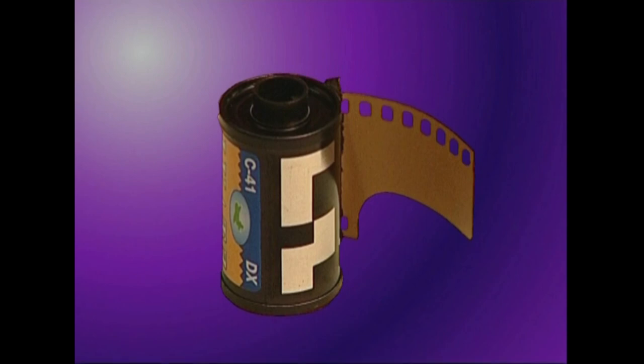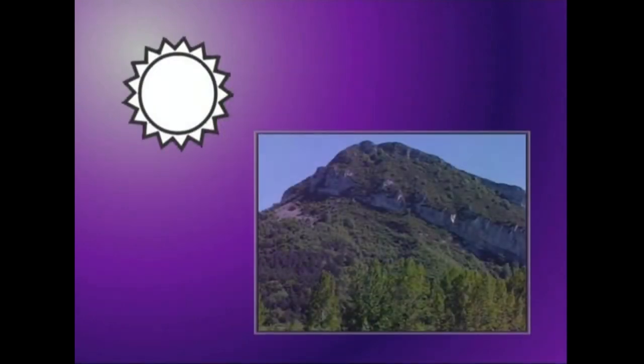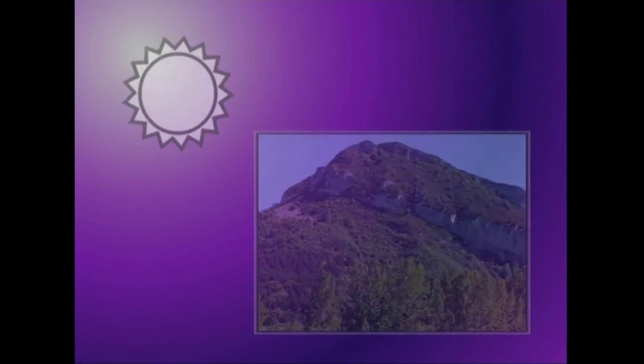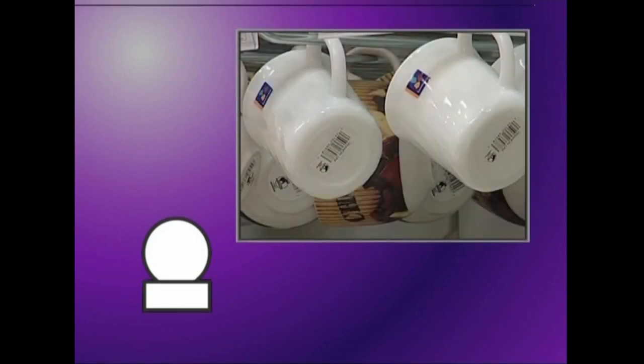Dakizuen bezala, merkatuan bi motatako pelikulak aurki ditzakegu. Argazkiak eguzkiaren argiaz egiteko erabili ohi dena, egun argikoa edo kampoaldekoa deitua, eta tungsteno argiaz erabili ohi dena, barrualdekoa deitua.